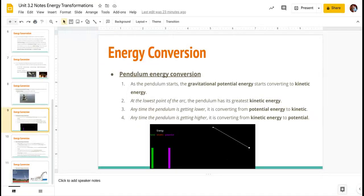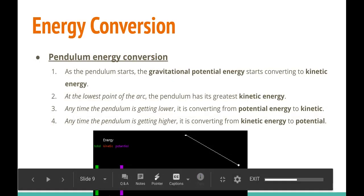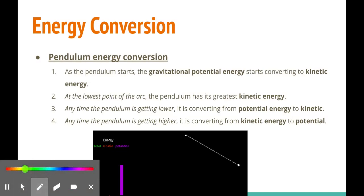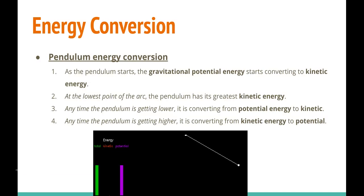Now for the pendulum — my GIF isn't working, but here's the idea. As the pendulum starts, the gravitational potential energy starts converting to kinetic energy. Right at the top — when you hold it at that angle and let it go — that's where the pendulum will have the greatest amount of potential energy it can possibly have. When you release it and it starts to move down, that's where kinetic energy begins to rise. It's converting that potential energy into kinetic energy.